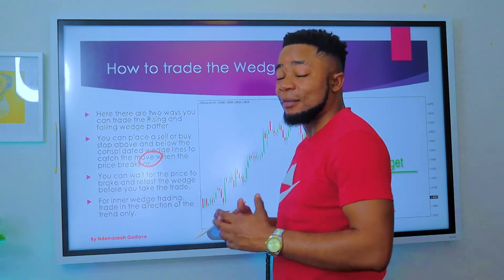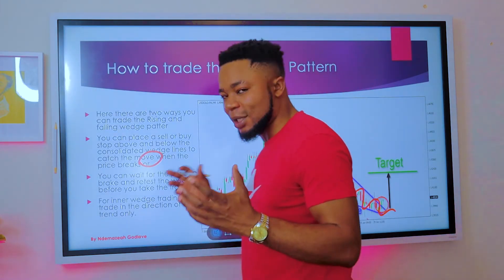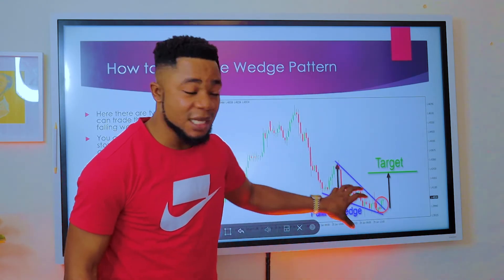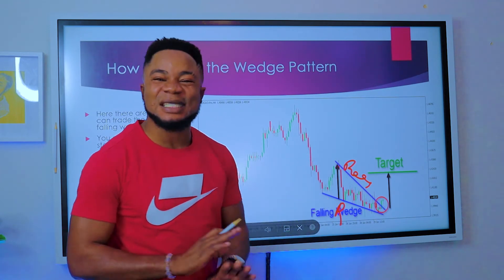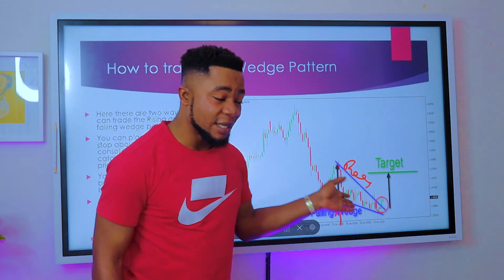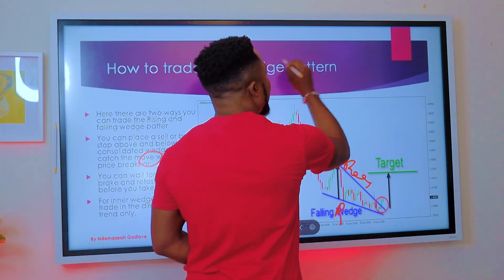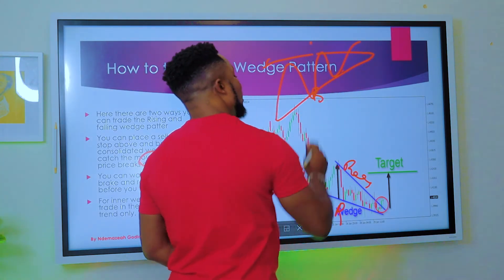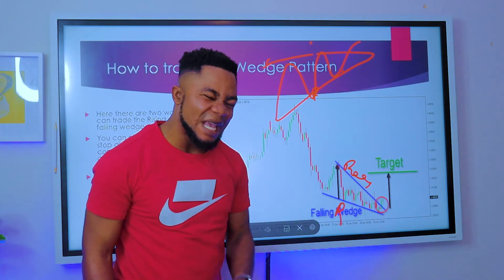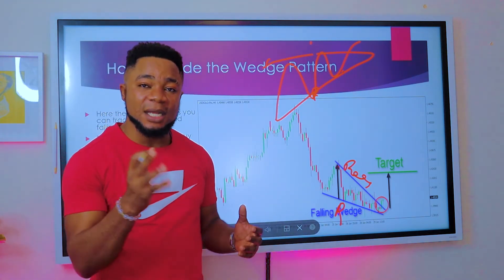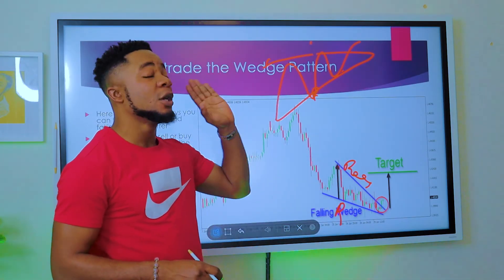Waiting for the break and retest allows you to know where to place your stop loss and where to target your trade, aiming for a risk-to-reward of at least 1:2. For inner wedge trading, trade in the direction of the trend. If it's a falling wedge with the market going down, only look for sell trades. If it's a rising wedge with the market going up, only look for buy trades. Don't try to catch a falling knife or swim upstream — trade with the trend.